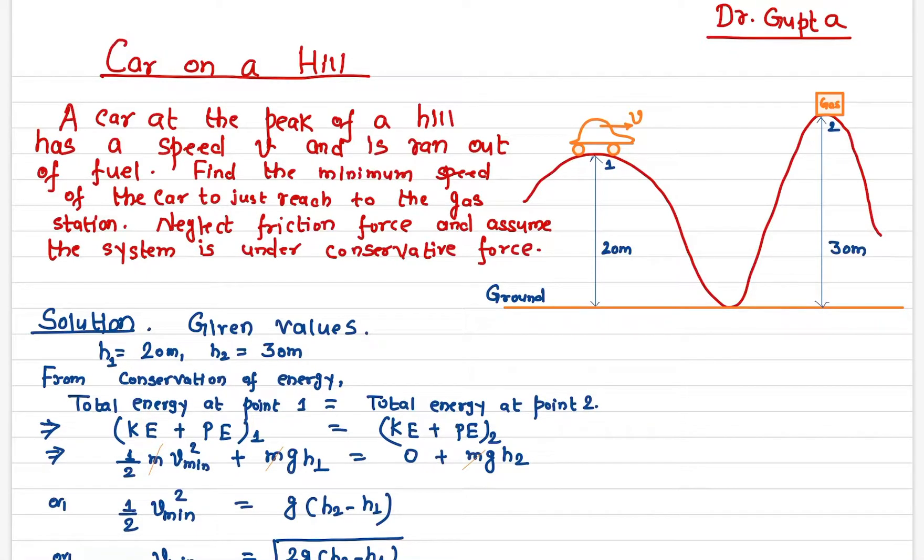The question is: how much velocity or kinetic energy does this car need to reach the gas station? We assume the entire system is under a conservative force, where the total mechanical energy is conserved, just like in a gravitational field. We also assume there is no friction force.